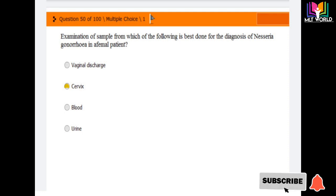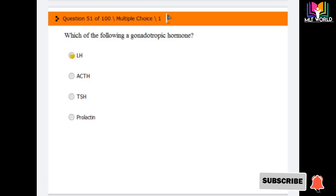Question number 50: Examination of sample from which of the following is best done for the diagnosis of Neisseria gonorrhoeae in female patients? Options are vaginal discharge, cervix, blood, urine. The answer is cervical sample. Cervix, the second option, is best for diagnosis of Neisseria gonorrhoeae in female patients.